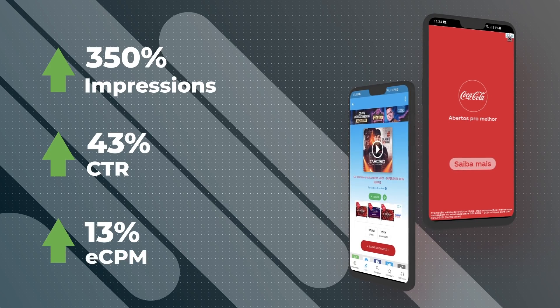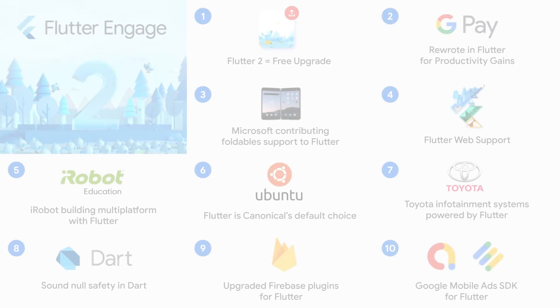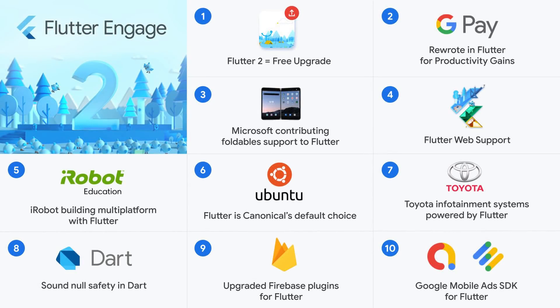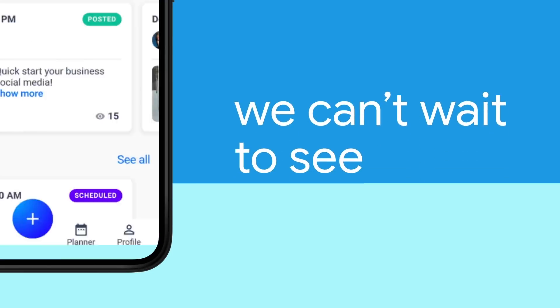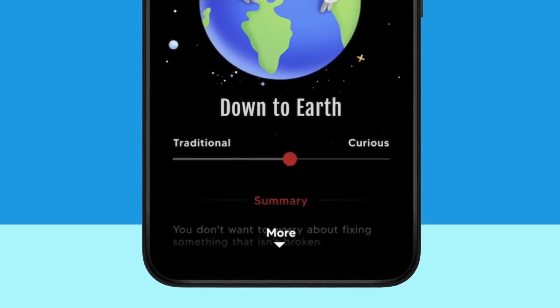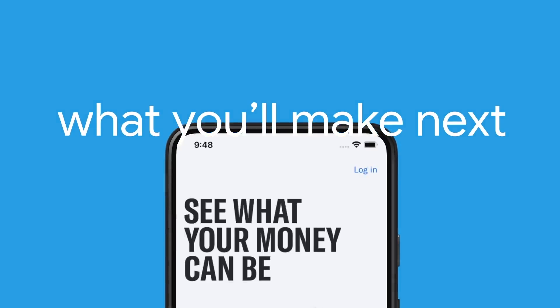The Google Mobile Ads SDK for Flutter is available today to download from pub.dev. Flutter is the first UI platform designed for an ambient computing world — a portable toolkit for building beautiful, native, fast experiences wherever you might want to paint pixels on the screen.